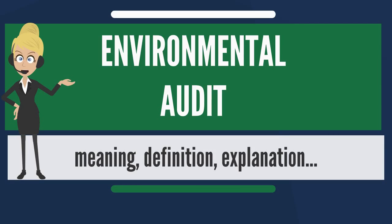Compliance audits tend to be the primary type in the U.S. or within U.S.-based multinationals. As the name implies, these audits are intended to review the site/company's legal compliance status in an operational context. Compliance audits generally begin with determining the applicable compliance requirements against which the operations will be assessed. This tends to include federal regulations, state regulations, permits and local ordinances/codes. In some cases, it may also include requirements within legal settlements.